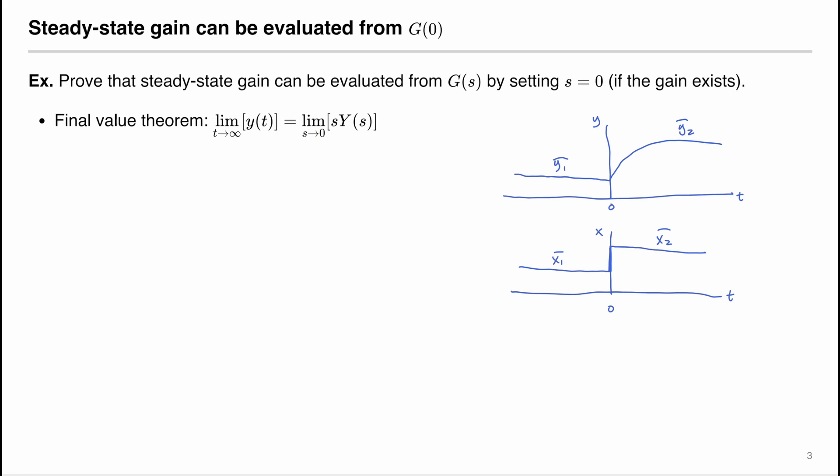So how do we determine the steady-state gain? Here I prove that the steady-state gain can be evaluated from G(s) by setting s equals to 0. So we will have K equals to G when s equals to 0. To prove that, we start with the definition of the gain.